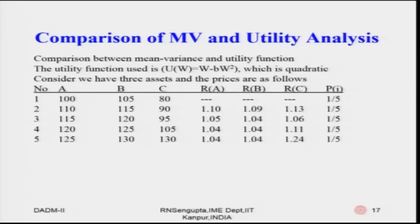We went into the concept that if the utility function is quadratic, there is some relationship with respect to the returns being normal and vice versa. We will come back to those two slides as mentioned at the end of lecture 7. So we are trying to compare the mean variance concept and the utility function. The utility function is quadratic, of the form A·w + B·w² + C, here given as w minus B times w², and we consider three financial assets.